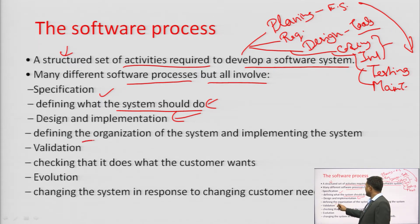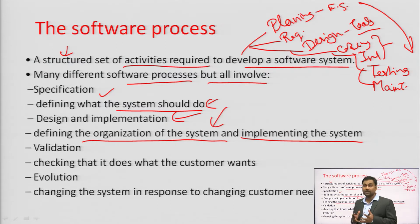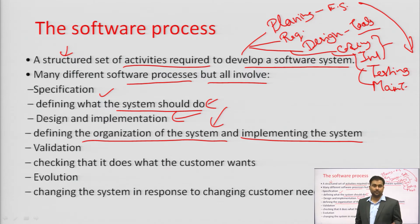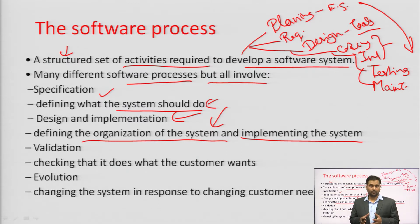This involves defining the organization and implementation of the system — what hardware and software requirements are needed. For example, some websites don't run on certain browsers: some government websites only run on Internet Explorer, not on Mozilla Firefox or Chrome. This is a compatibility issue — a system requirement.